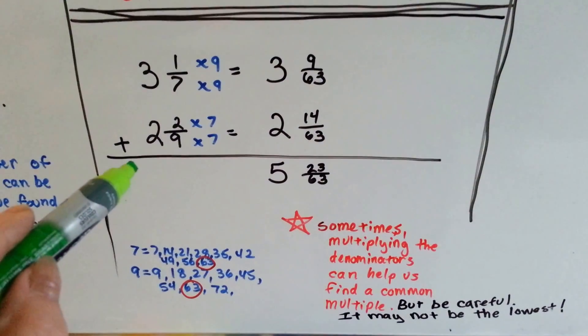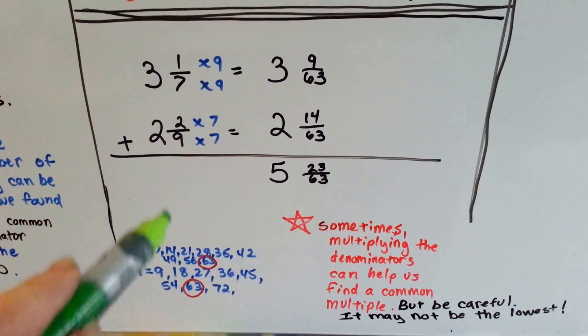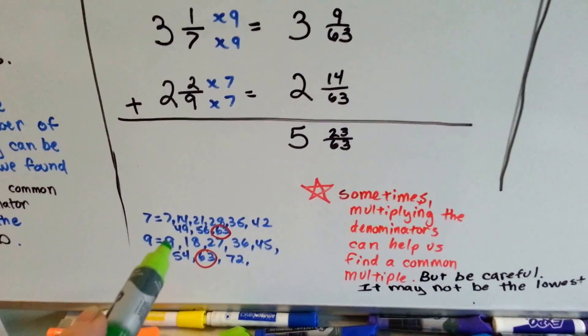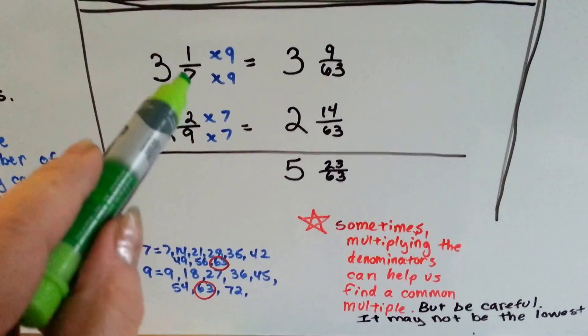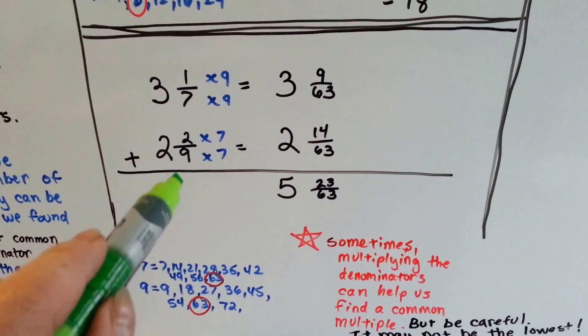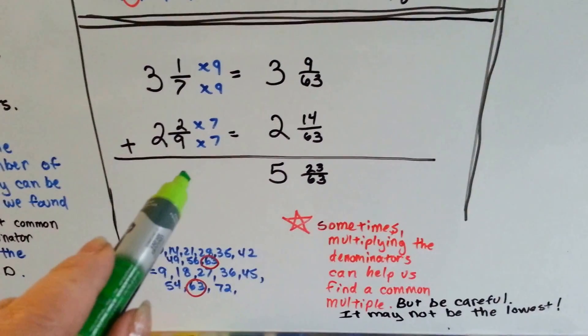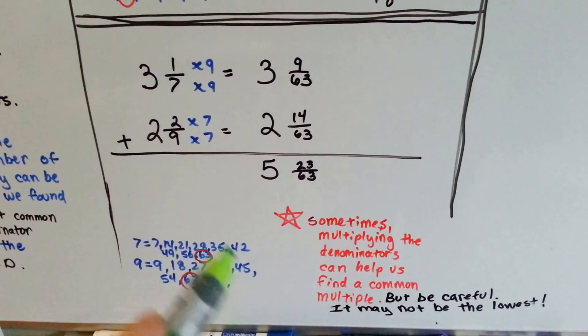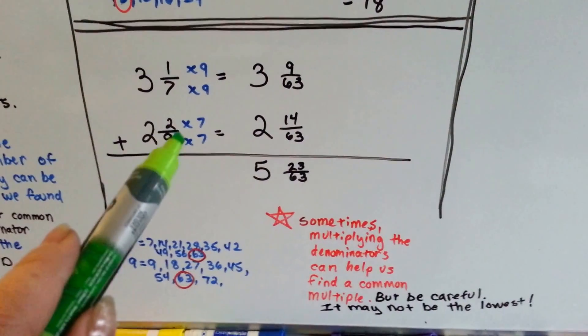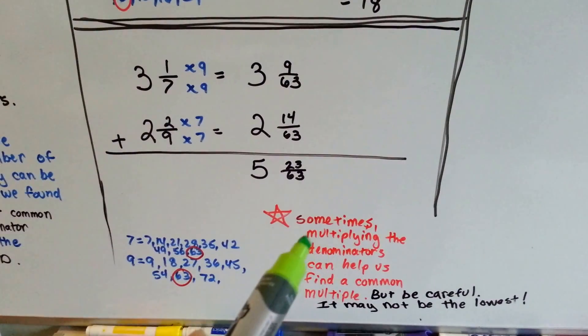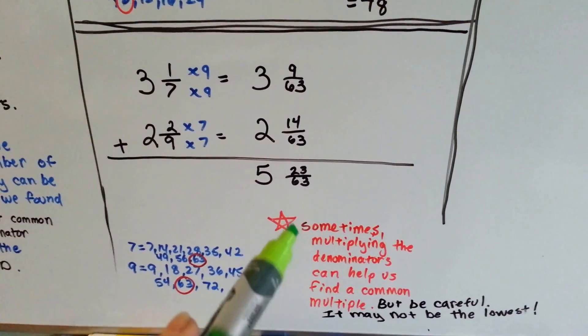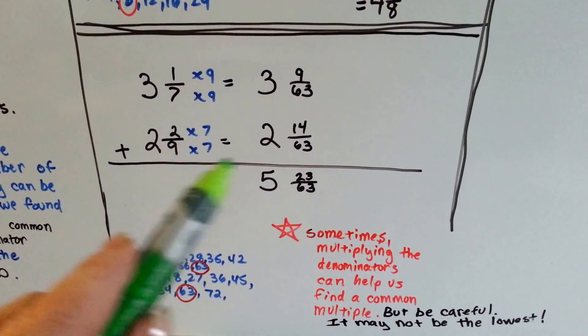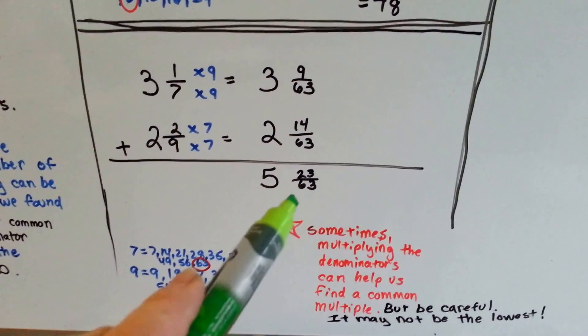Sometimes when we're adding fractions, it's hard to find the common product. We keep listing them and listing them, and we don't get to one until we realize that they multiply to each other. And that's what happens in this case, with the seven and nine. Now you have to be careful about jumping to do this too quickly, because you could end up with a big, huge denominator for no reason, and it may not be the lowest. It'll give you a lot of work at the end trying to reduce it to its lowest terms.